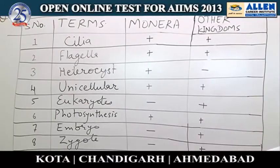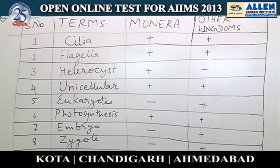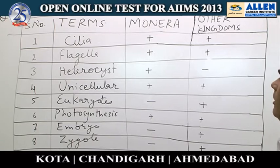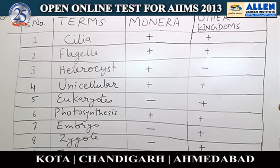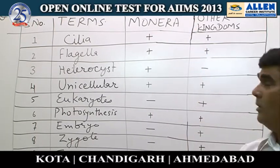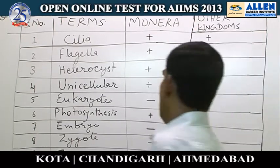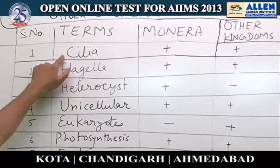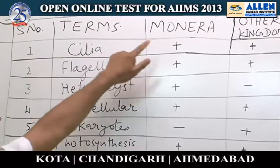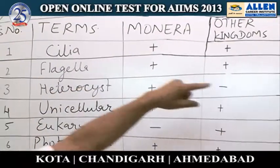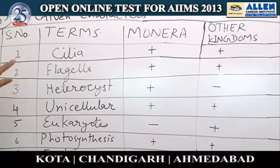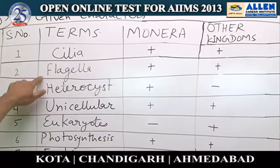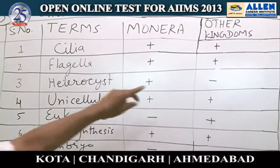We have to search which character is only present in Monera from these 15 characters. First of all, cilia — you can see cilia are present in both Monera and in other kingdoms also. Similarly, flagella are also present in both.